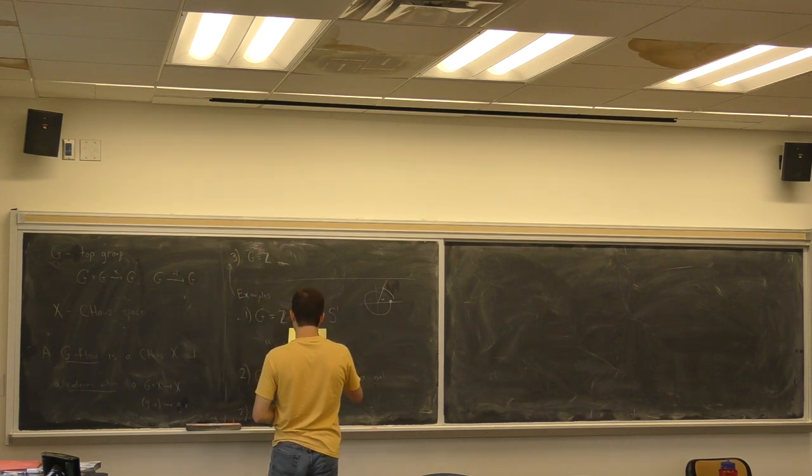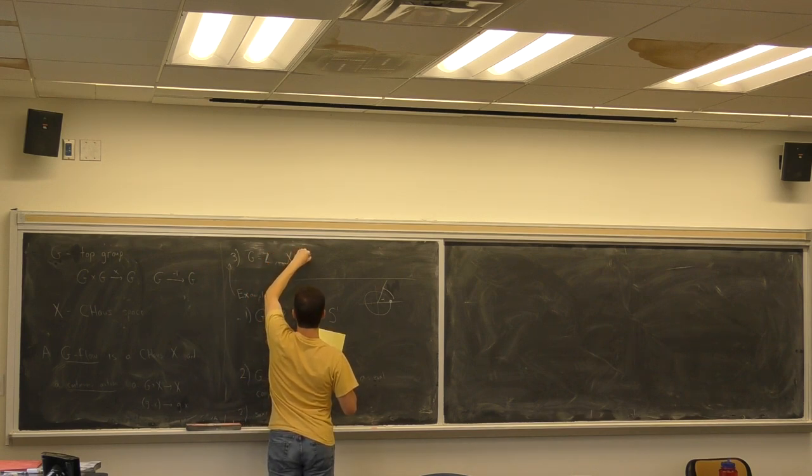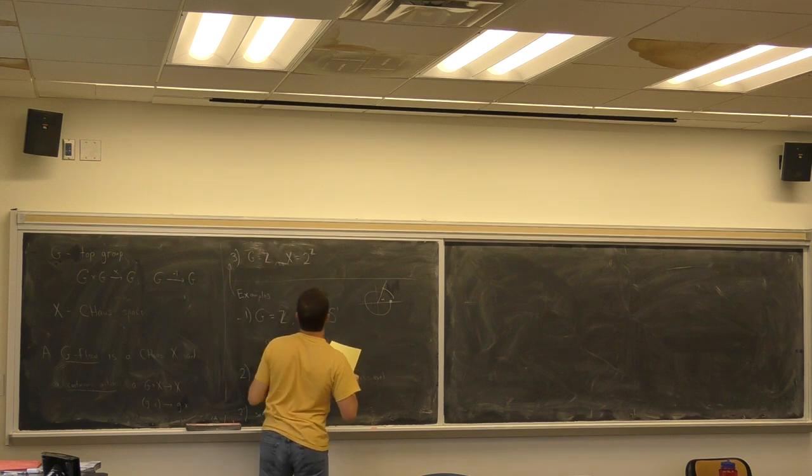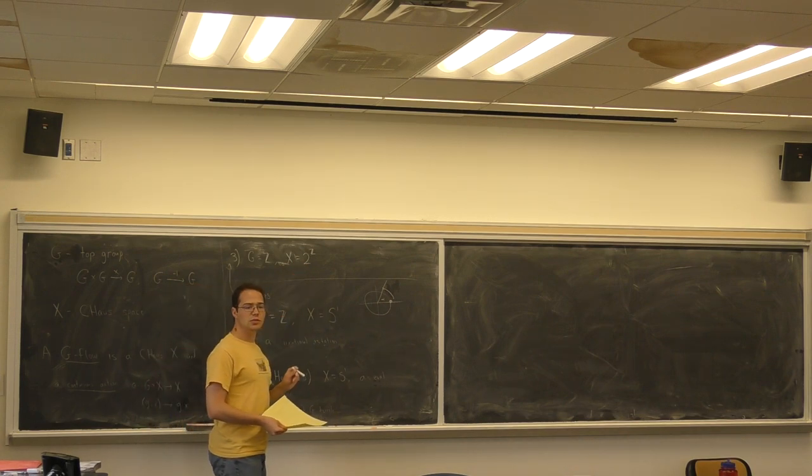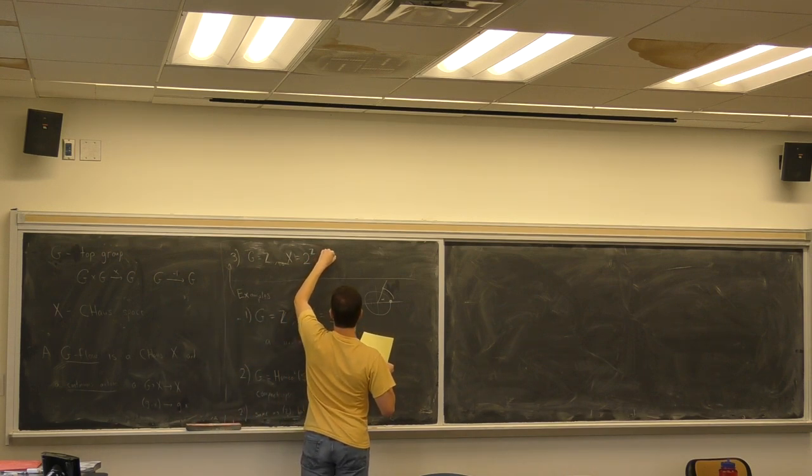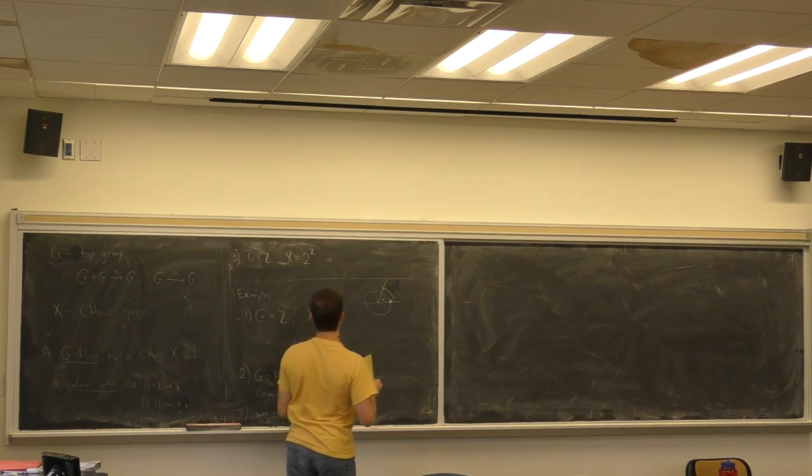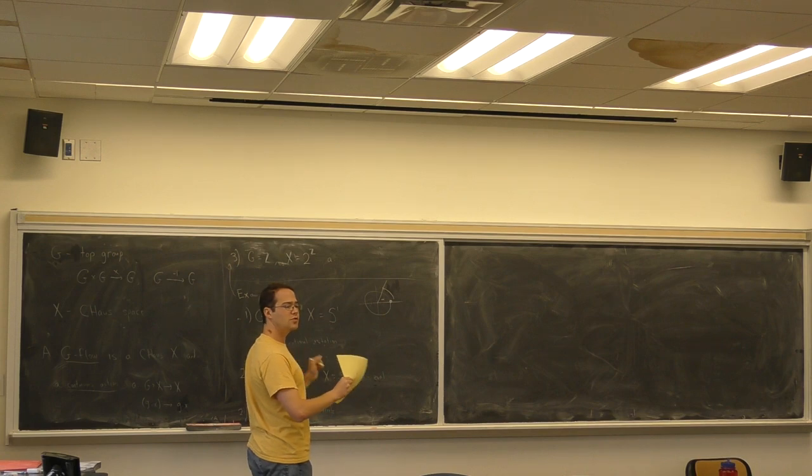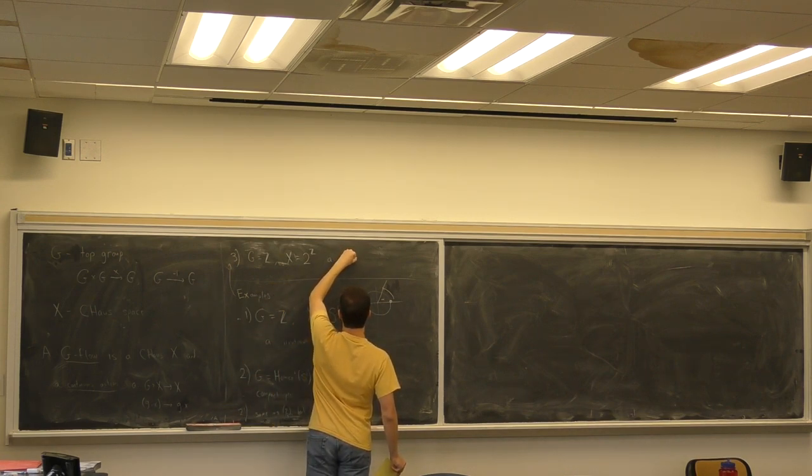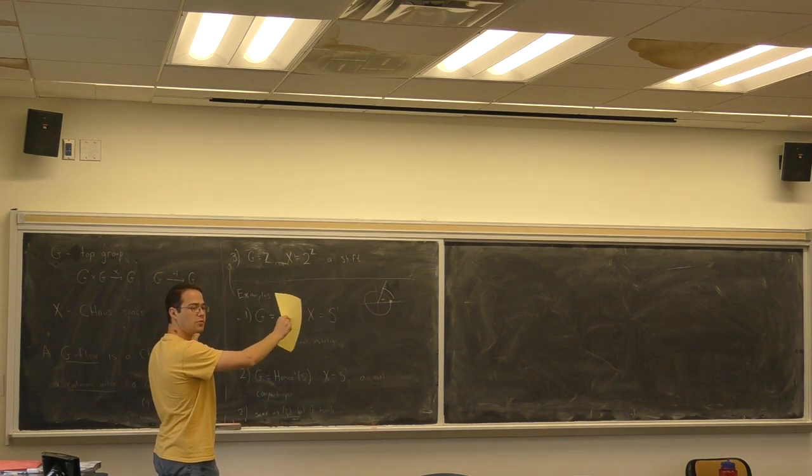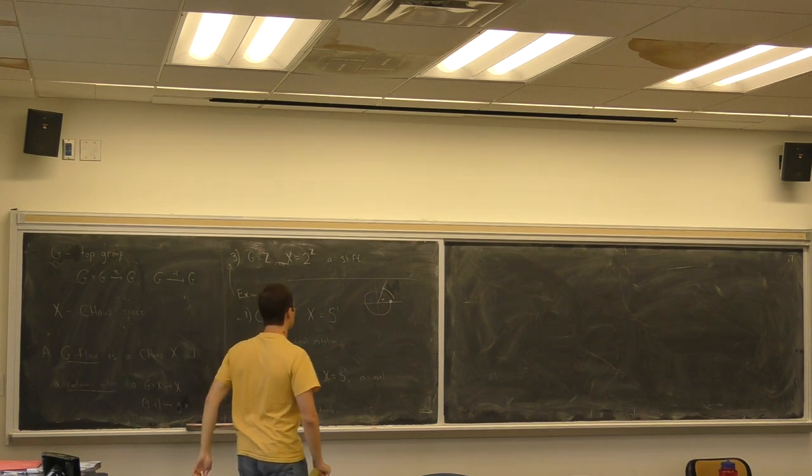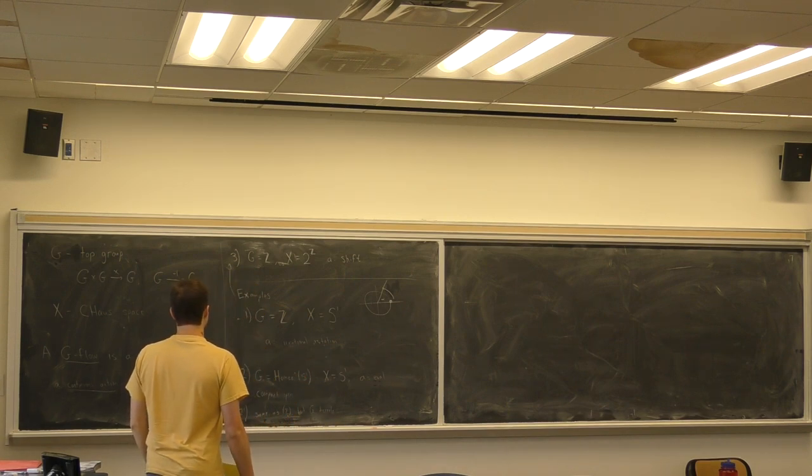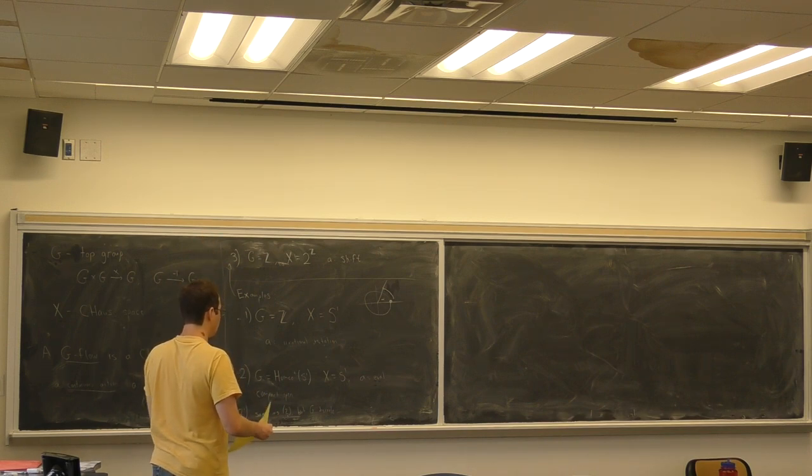So let's let g be the integers again. Now the space is going to be the set of all bi-infinite 0, 1 strings. Just 0s and 1s going to the left and right forever. I give this the product topology. So that's going to be nice and compact. And then what is the action going to do? Again, since it's the integers, I just have to tell you what the generating transformation does. It's going to be the shift. So I have a string of 0s and 1s going in both directions forever. I can bump it to the left and right by however many integers I want. So that's a bit more abstract. Maybe a bit more abstract that comes from symbolic dynamics. Alright, so these are four examples of flows.